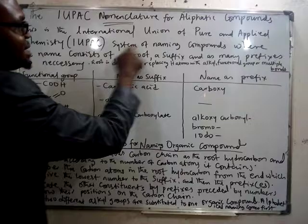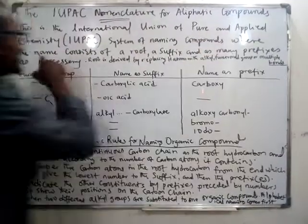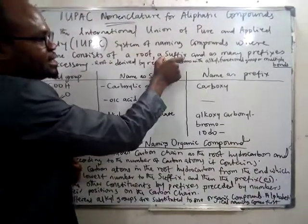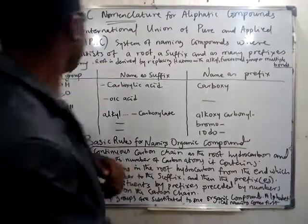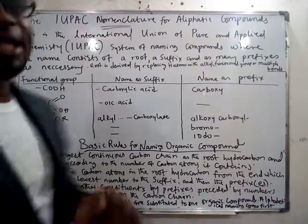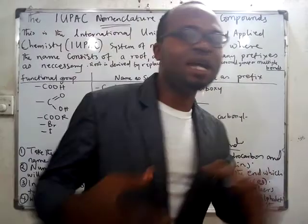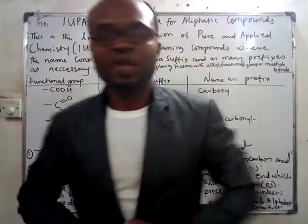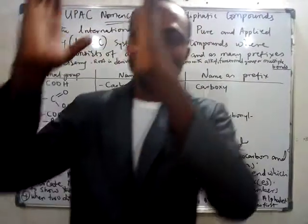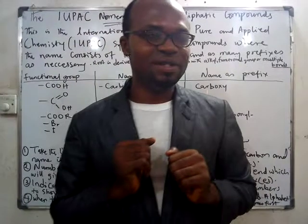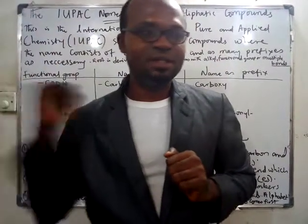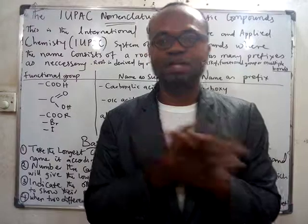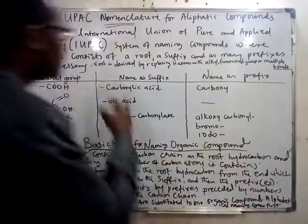So it's a system of naming compounds. The name consists of a root, a suffix, and as many prefixes as necessary. Is that clear? So in IUPAC nomenclature for organic chemical compounds, we have a name consisting of a root, a suffix, and as many prefixes as necessary.